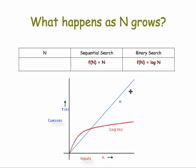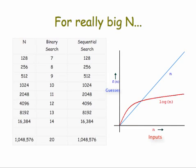Where this is really important is as N gets really big. And here's a table to illustrate that point. So notice that for binary search, 16,000 numbers will take 14 guesses to find it. Whereas for sequential search, it'll take 16,000 guesses. That's quite a huge difference.